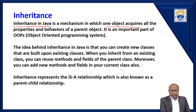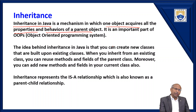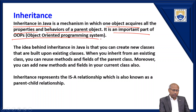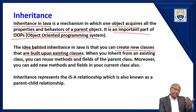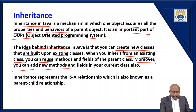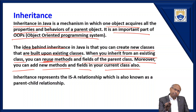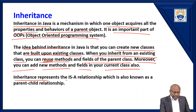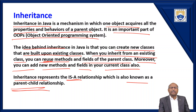Inheritance in Java is a mechanism in which one object acquires all the properties and behaviors of the parent object. Whatever properties are there with the parent, the same thing is also applicable to the child. It is an important part of the object-oriented concept. The idea behind inheritance in Java is that you can create new classes built upon existing classes. When you inherit from an existing class, you can reuse its methods and fields. Moreover, you can add new methods and fields to the current class as well. Inheritance represents an IS-A relationship, also known as a parent-child relationship — the parent's property is applicable to the child.